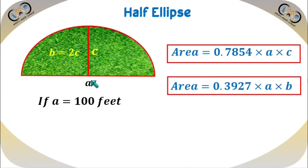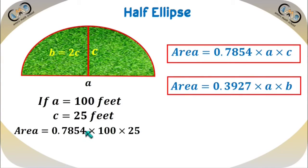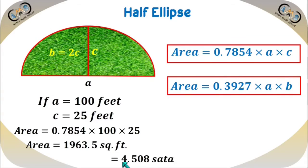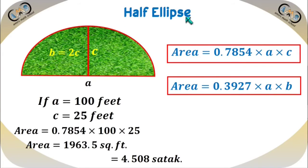For example, if A equals 100 feet and C equals 25 feet, then the area is 0.7854 times 100 times 25, which is 1963.5 square feet. After dividing this value by 435.6, we get 4.508 satoq. In the case of a half ellipse, we must remember that the value of C should be the highest perpendicular — if we draw many perpendiculars, C must be the longest one. Taking C at its highest length gives the most accurate result. So for half ellipse: area equals 0.7854 times A times C.